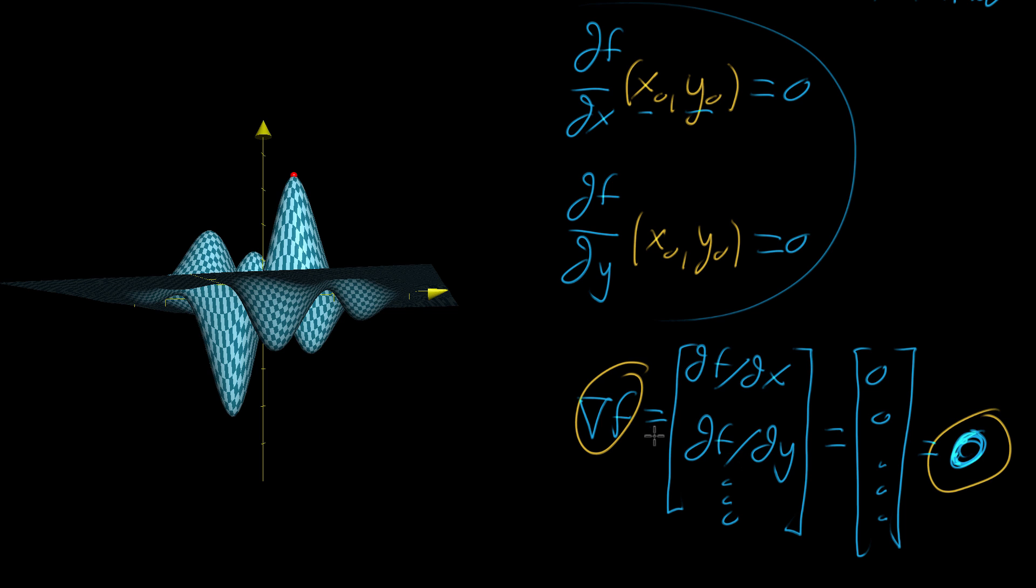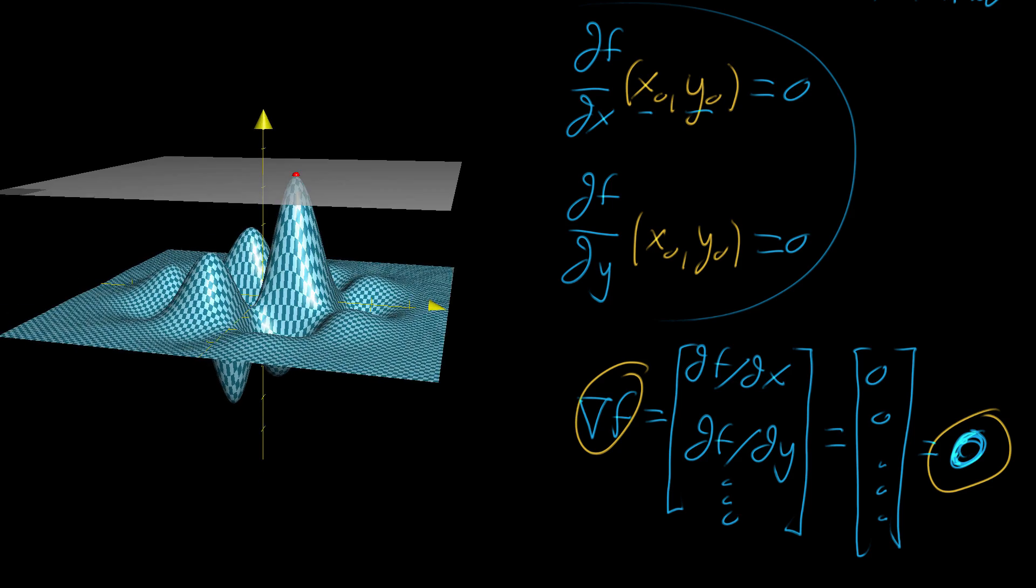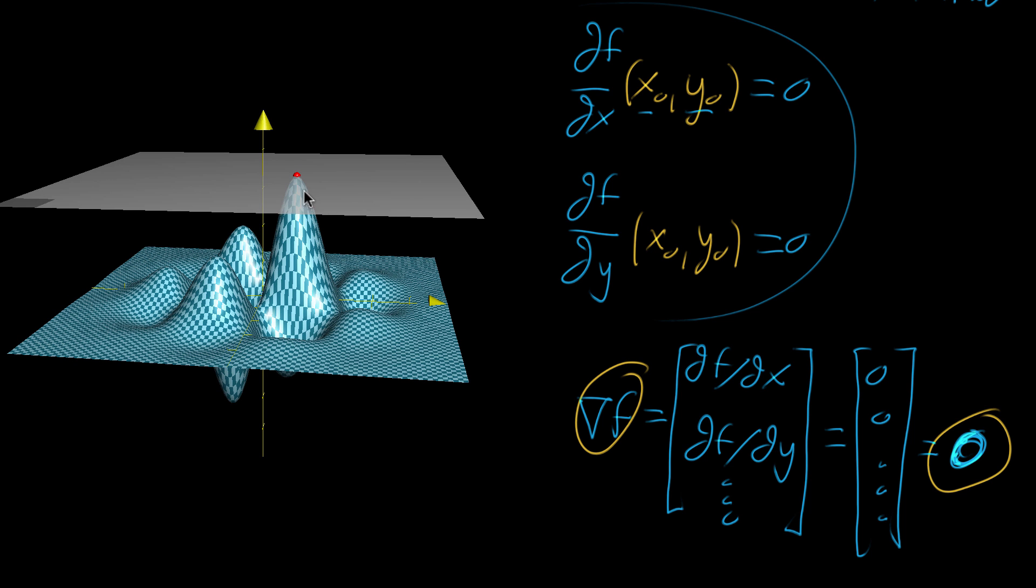But in practice, every time that you're expanding that out, what that means is you find all of the different partial derivatives. So this is really just a matter of notational convenience and using less space on a blackboard. But whenever you see this, that the gradient equals zero, what you should be thinking of is the idea that the tangent plane, the tangent plane is completely flat.